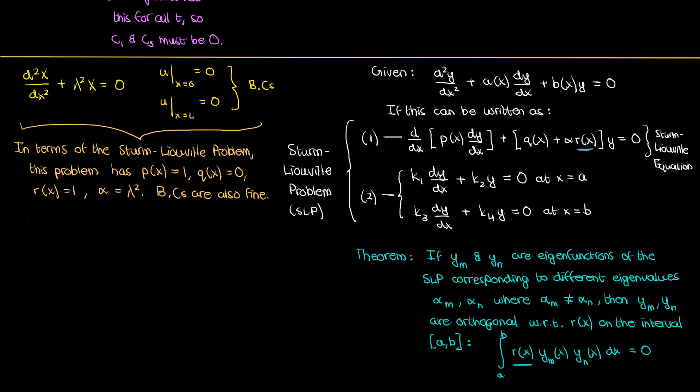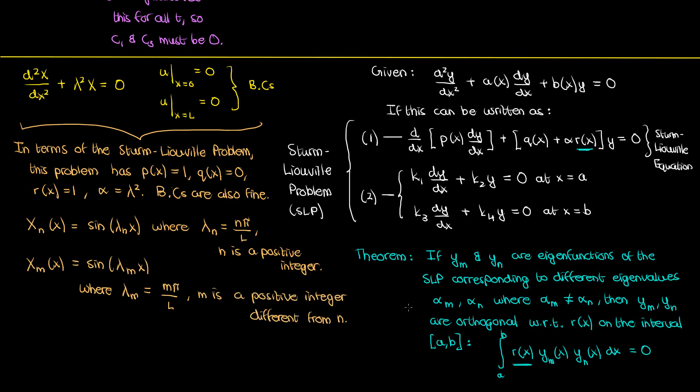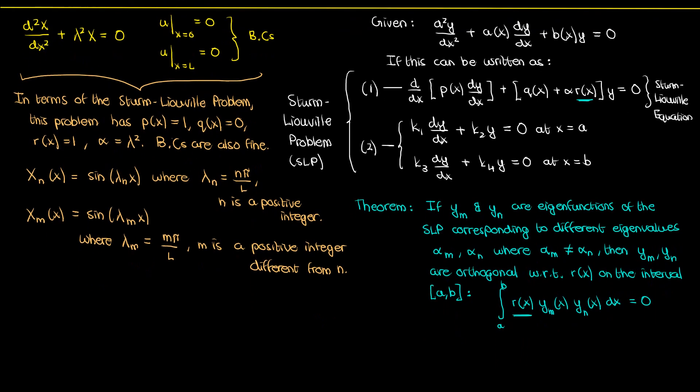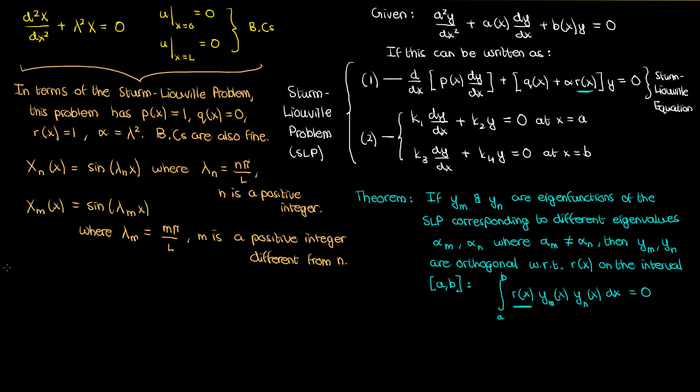Anyway when we solve this ODE for capital X we got solutions of this form sine of lambda sub n times x. There was also a cosine there but that was removed because of our boundary conditions. Now this solution capital X sub n corresponds to a particular value of lambda which is the eigenvalue that I'll call lambda sub n. Specifically the eigenvalue is lambda sub n squared but it doesn't really matter since they're directly related. It's possible to write now another solution capital X sub m that now corresponds to a different eigenvalue lambda sub m. Since we now have two solutions to the Sturm-Lieuville problem for two different eigenvalues lambda sub n and lambda sub m, we can apply the Sturm-Lieuville theorem to say that these two solutions are orthogonal on the interval from zero to L.